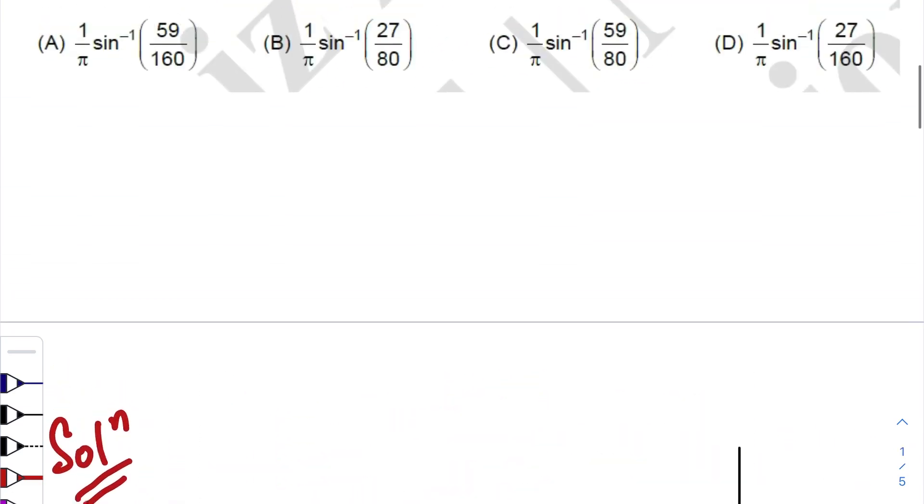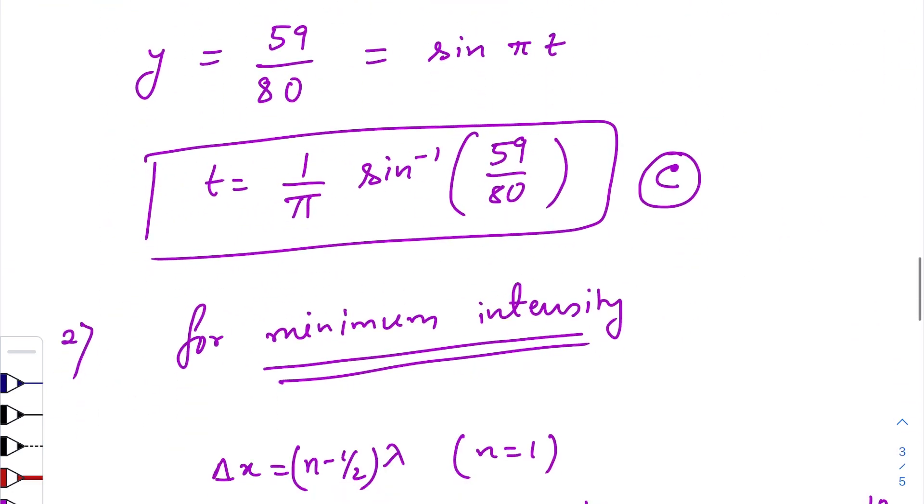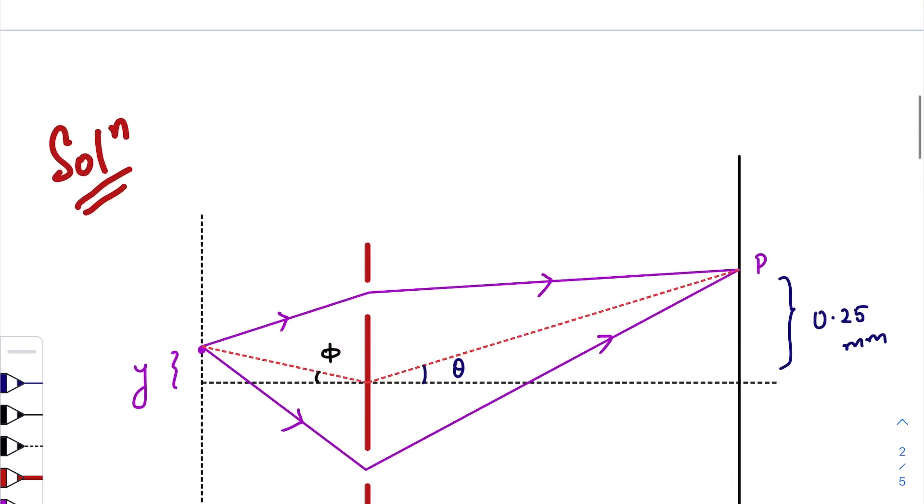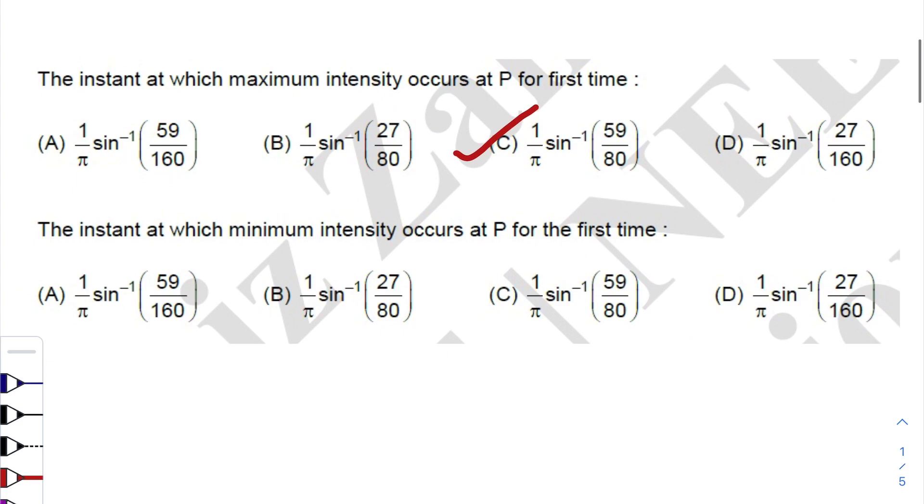So here we see that option 27 by 80. Option b is matching. So option b is correct.